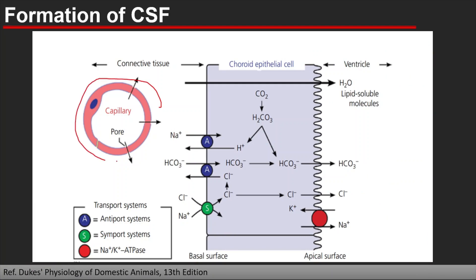We have the blood capillaries. These are fenestrated; the endothelial cells have pores, so they do not have the blood-brain barrier or tight junctions. This is the epithelial cell, or let me say the ependymal cell. One side is the basal surface where we do not find cilia or microvilli. Another surface is the apical surface where the villi are present.